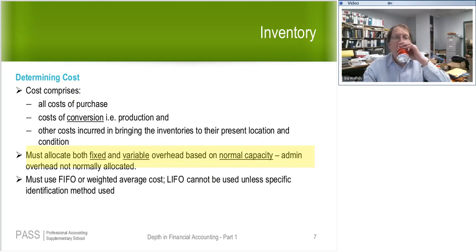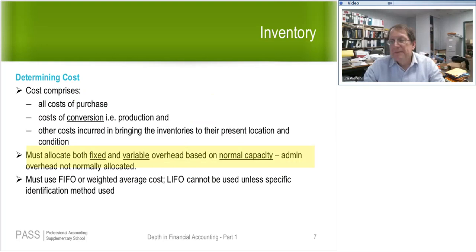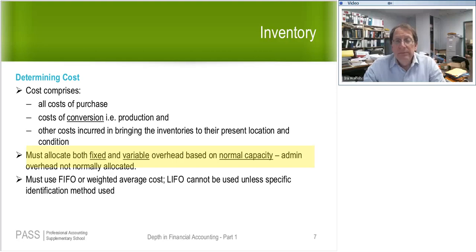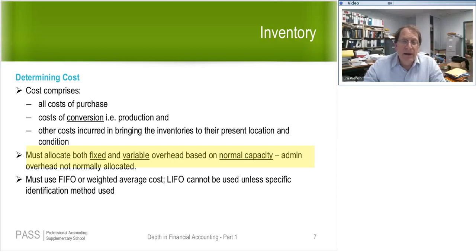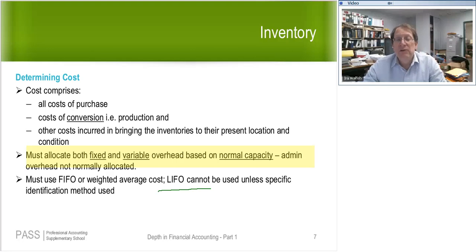What do I mean by normal capacity? What they mean is, let's say there's a strike — that's not normal, and now you're not using the plant. Should you start playing around with your overhead allocation to inventory because of the strike? Obviously it's going to be different, but the answer is no. You should not change it — it's temporary. You should allocate based on normal capacity. And of course, everybody knows this: you cannot use LIFO. You have to use FIFO, weighted average, or similar.